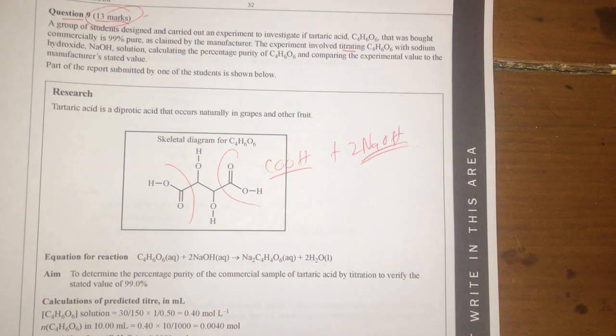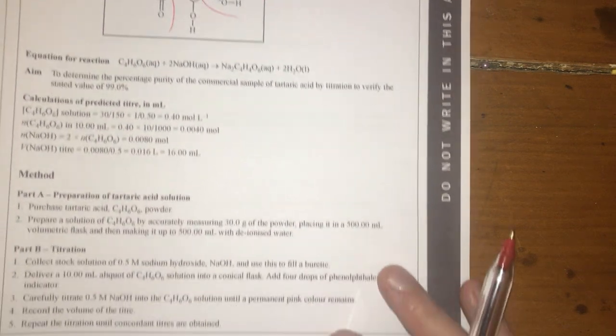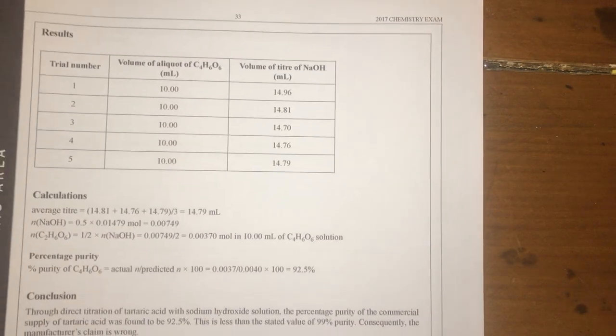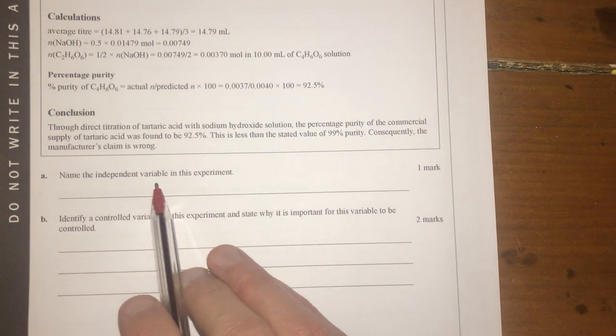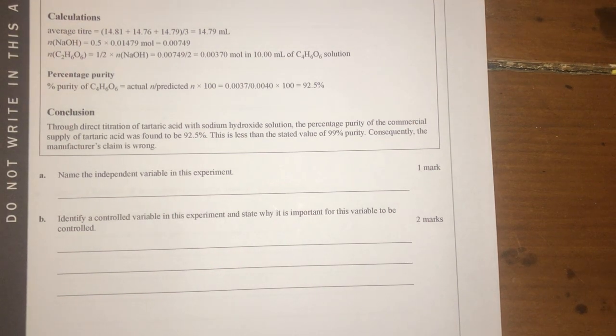Aim, that's fair enough. What I'm going to do is come back to this once I actually read the questions. Some results here, which looks all good. Let's look at the question. So name the independent variable in this experiment. All right, this is a titration.